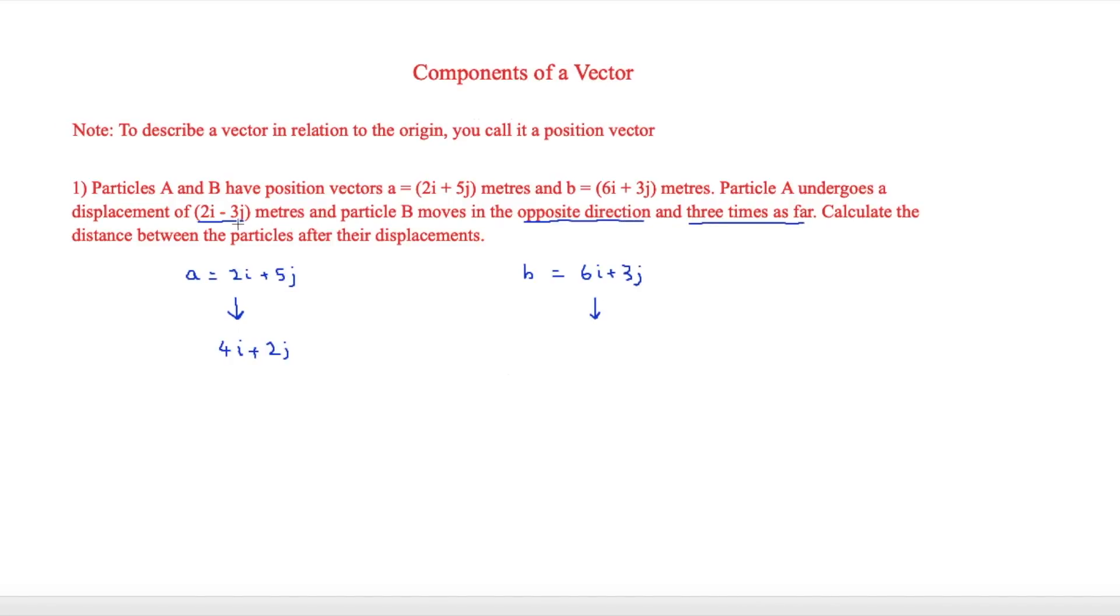And then now we have to look at it says in the opposite direction and three times as far. So if it's in the opposite direction, then we can assume that the 2i will turn to a negative. So it'll be negative in the x direction and then positive in the y direction. And then if we also times this by 3, so we have 6i, so then we'll have minus 6i because it's opposite direction and three times as far to make that not i.